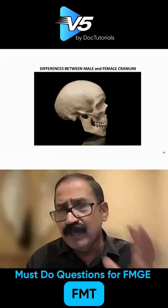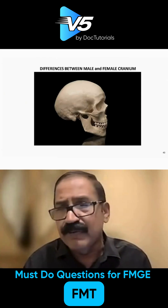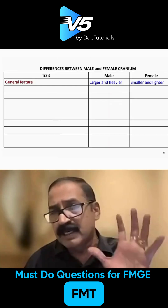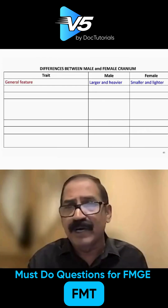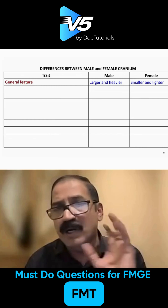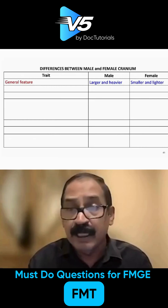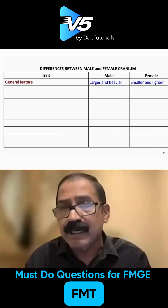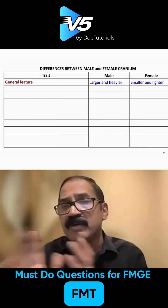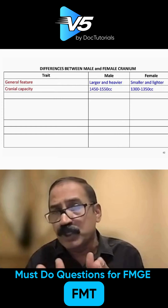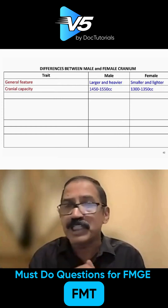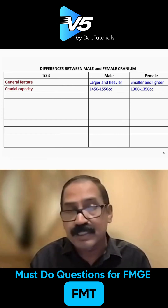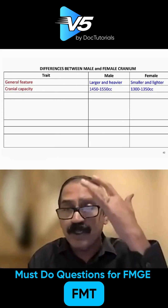Male skull is always heavy, larger and heavier, whereas female skull is smaller and lighter. The male skull capacity is about 1450 to 1550 cc, whereas female skull capacity is about 1300 to 1350 cc.